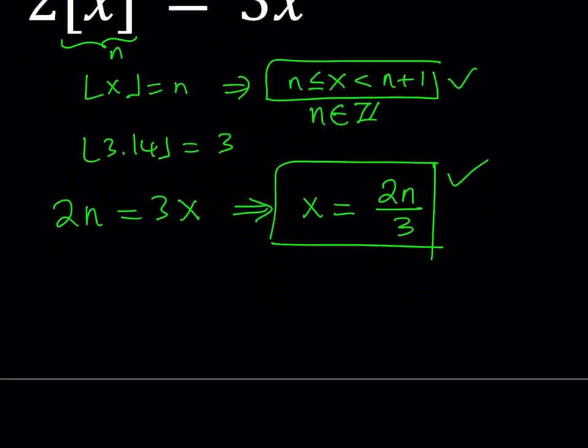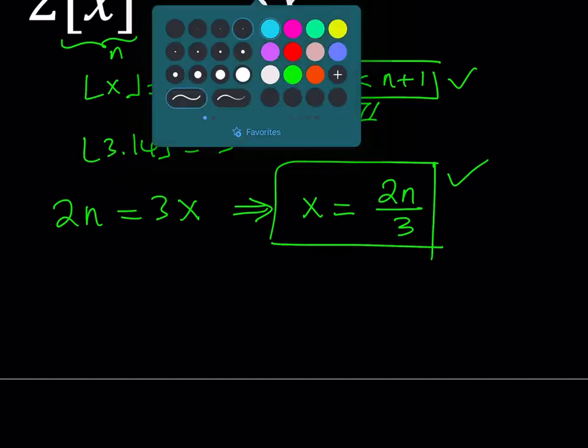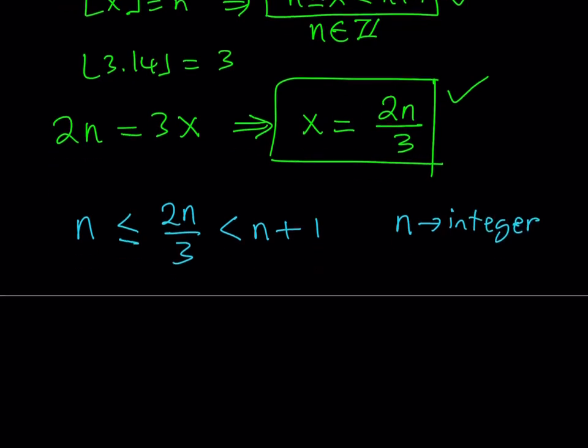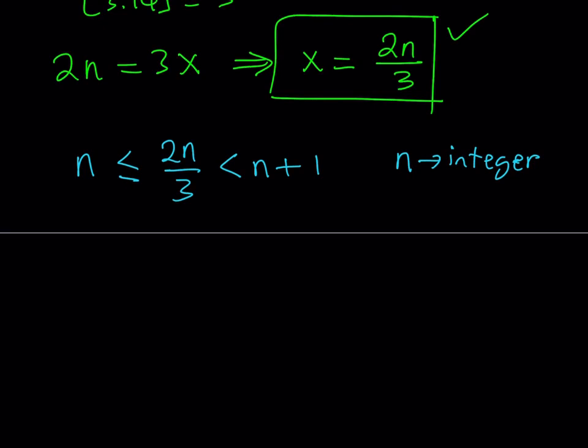Well, obviously, if x is equal to 2n over 3, I can replace this x here with that one. So I can just write this inequality as n less than or equal to 2n over 3, which replaces x, and then I have the n plus 1 here. So basically, what it comes down to is solving this inequality. I should say probably a system of inequalities because we do have two inequalities here. But again, remember that n is always an integer here. All right, let's go ahead and see how we can solve this inequality. And then, at the end, we're going to be finding the x values using this equation.